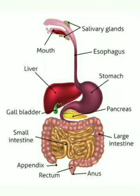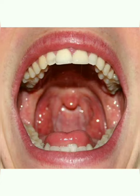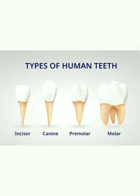We eat various types of food which must pass through the same digestive tract and be converted into smaller substances that can be utilized by our body. The process of converting larger molecules into smaller substances is called digestion. Food is cut and crushed by our teeth in the mouth and mixed with saliva. The teeth present in our mouth include incisors, which help in biting; canines, which help in tearing; and premolars and molars, which help in chewing and grinding the food.